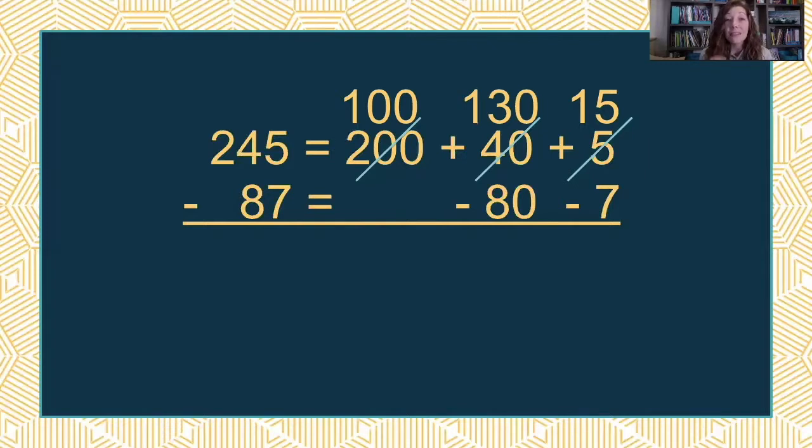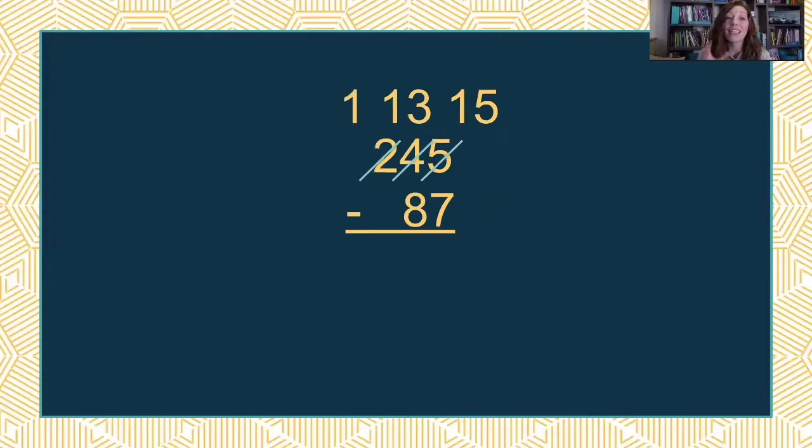And one of the biggest pieces we want kids to understand when they do this regrouping - that's why we call it regrouping and not borrowing now. You've really just taken that 245 and regrouped it. It is all still there. It's just grouped differently. It now has 100, 130, and 15. That still makes 245. It's just grouped differently. That is way different than what kids get here. Totally different understanding.